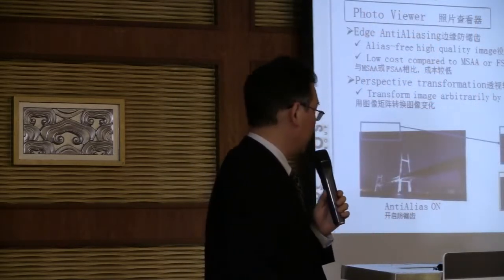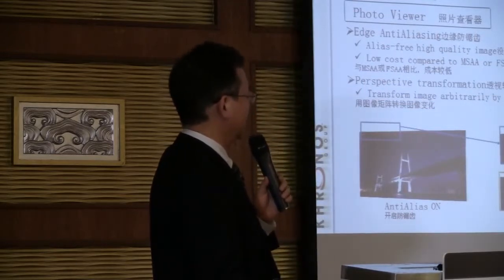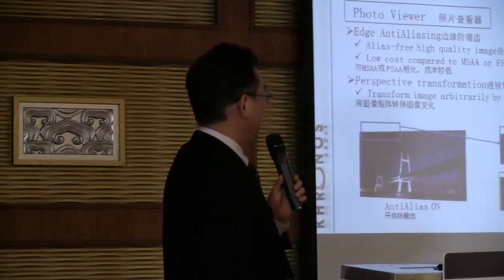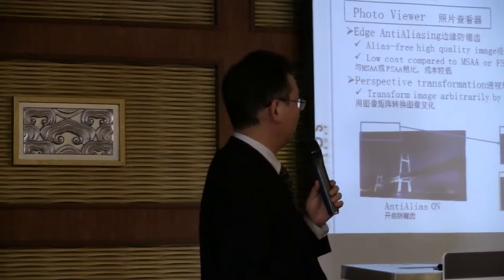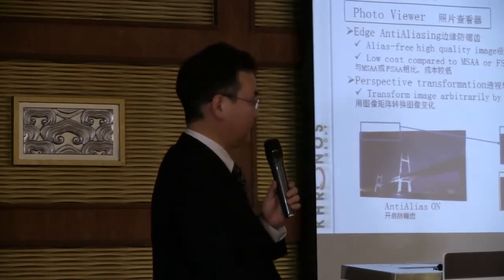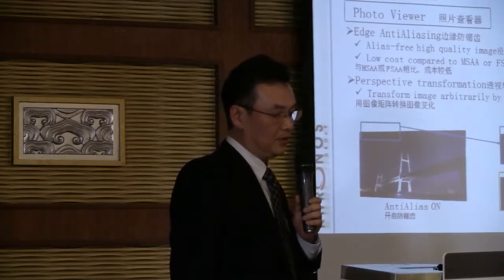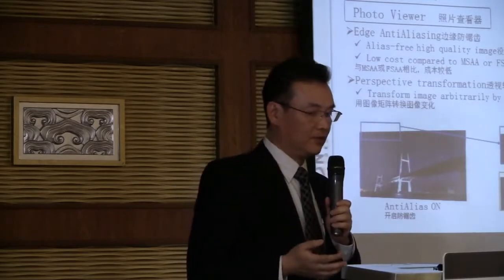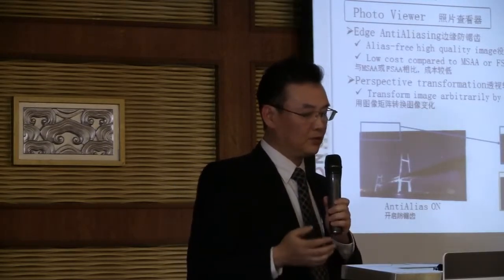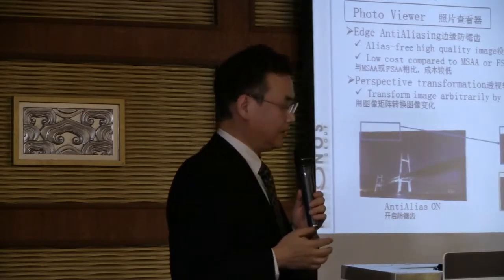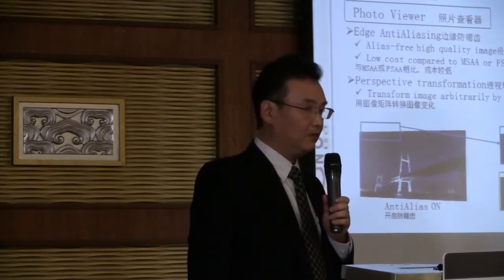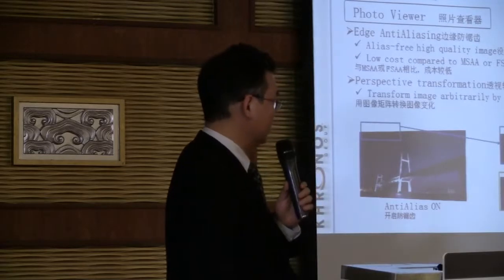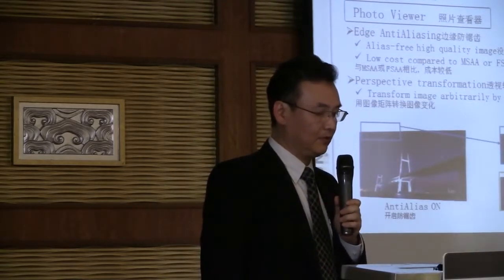I would like to explain some applications and good features in OpenVG. One application is a photo viewer. If you can render images using perspective transformation, it will allow you to render images like 3D. If you render with perspective transformation, you will see some kind of jagged edge. But OpenVG provides anti-aliasing as a default, so you will have a very smooth edge even with perspective transformation.